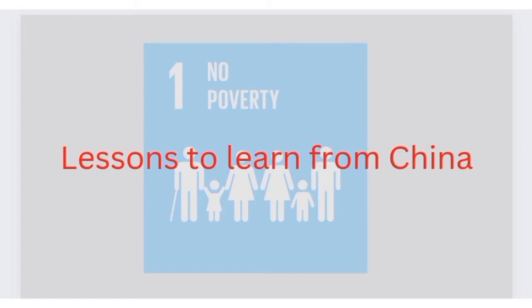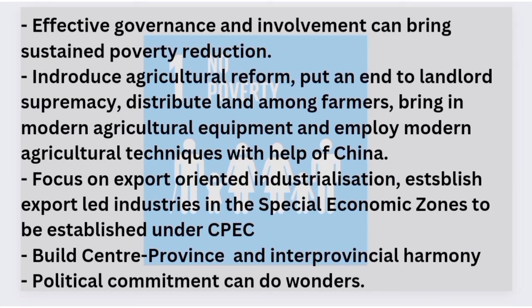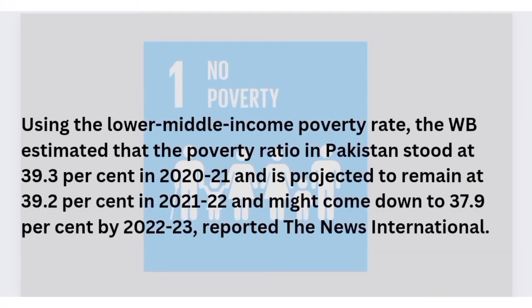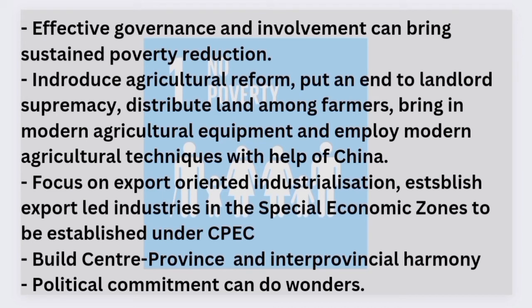Overall, China's poverty reduction journey has much to teach us. First, we must consider poverty a priority issue. According to recent World Bank data, Pakistan's poverty ratio is 39 to 40 percent, which is very high. We must treat it as a national issue and try to resolve it on a priority basis. What we need to learn from China's program is that there must be political will to improve standards.